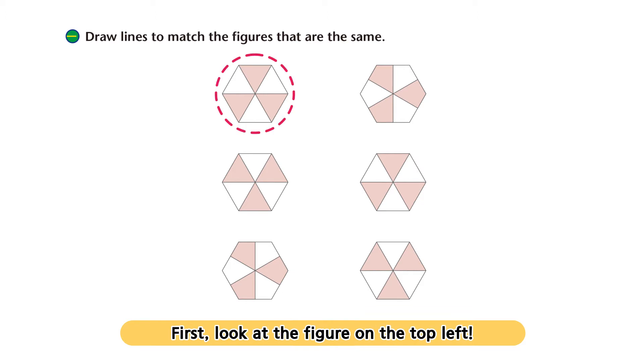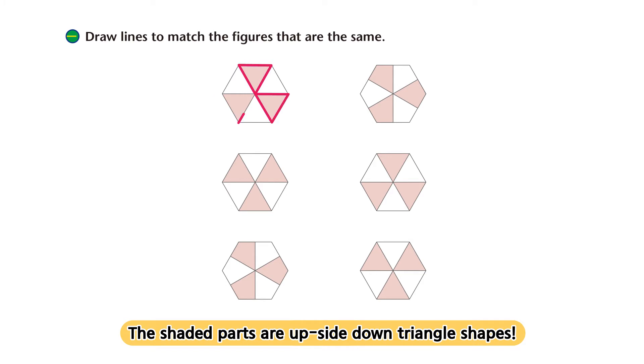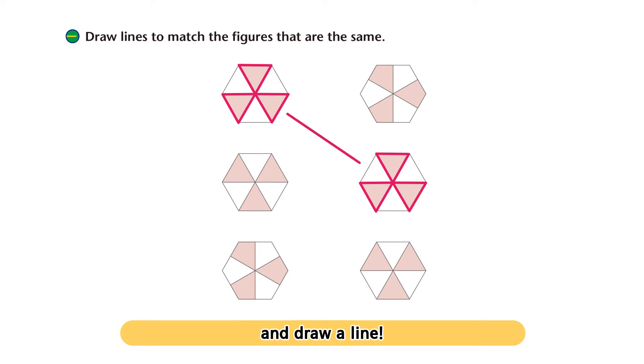First, look at the figure on the top left. The shaded parts are upside-down triangle shapes. Find the figure with the same shape on the right and draw a line.